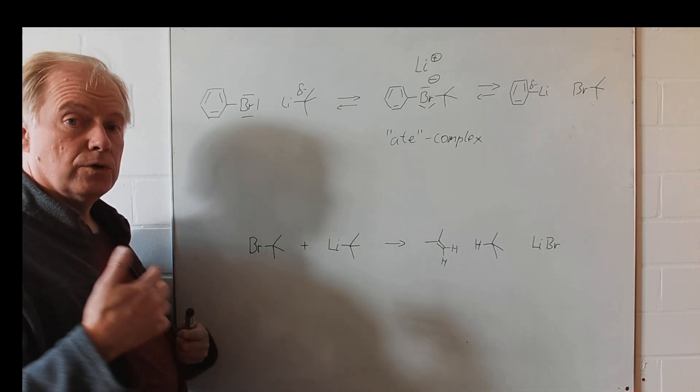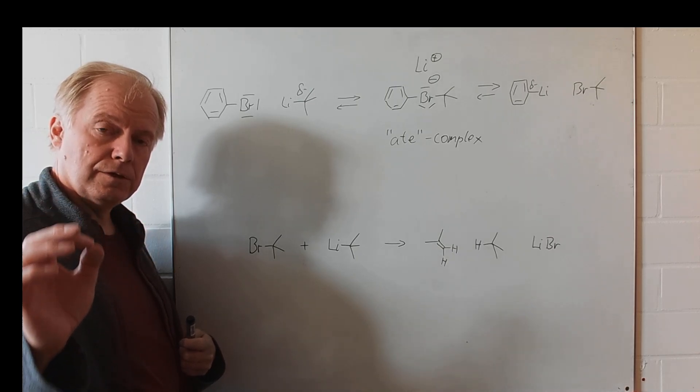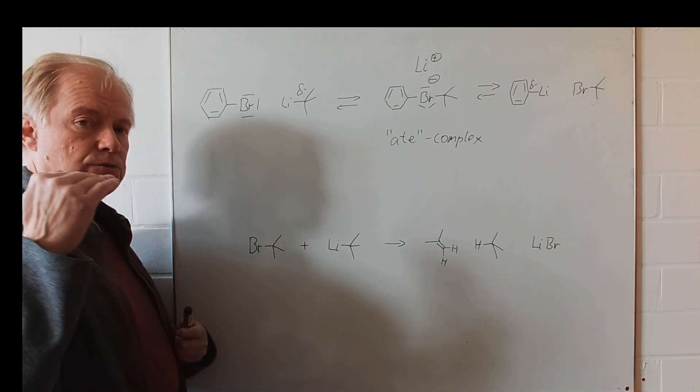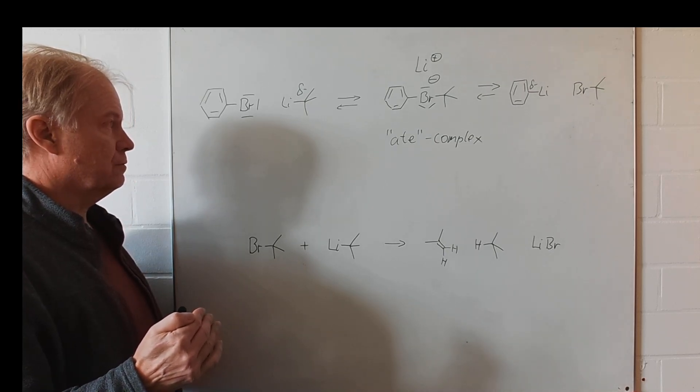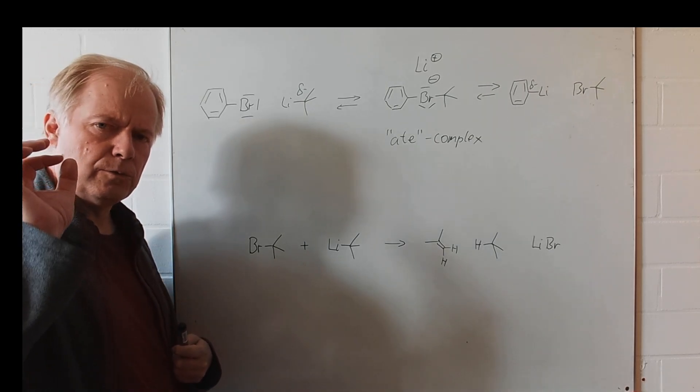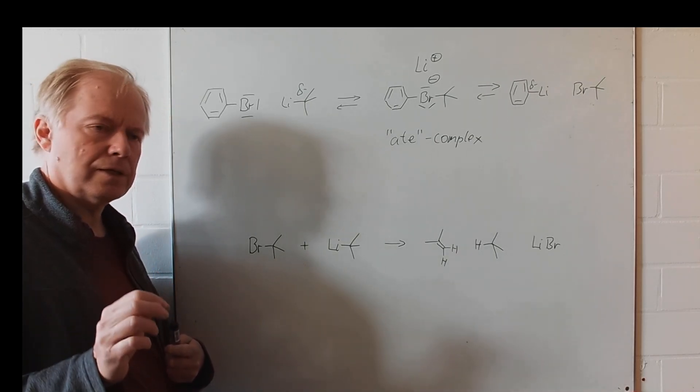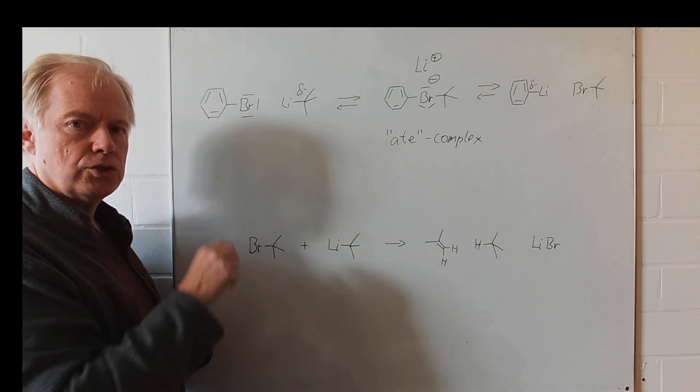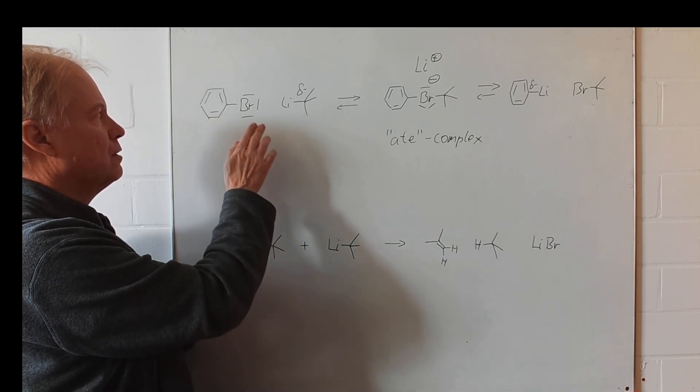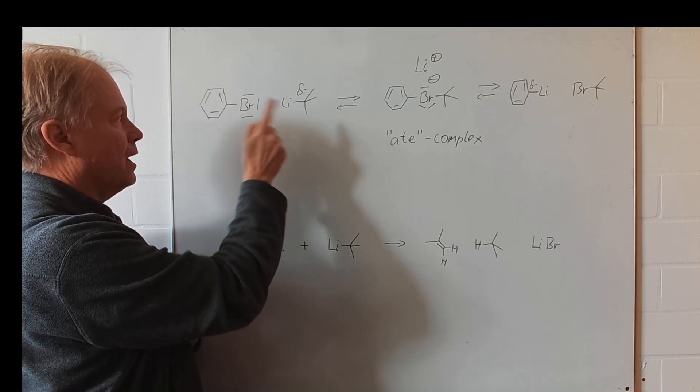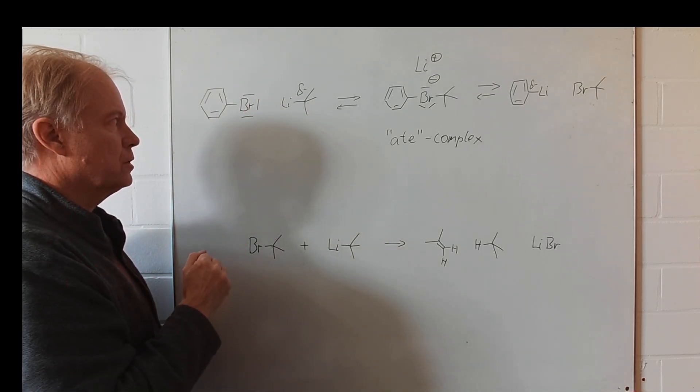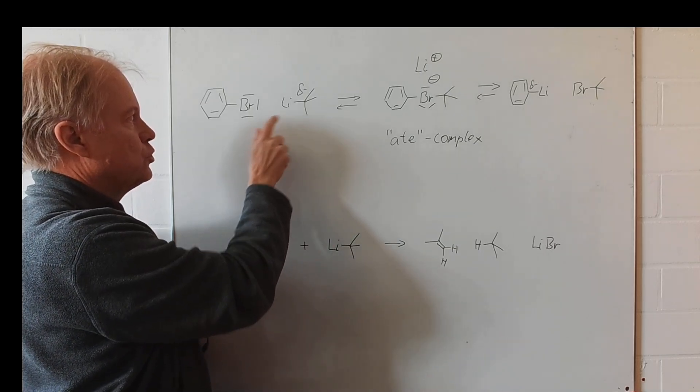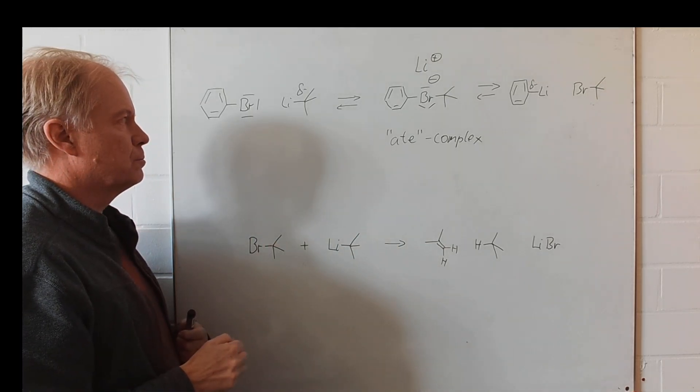We can also lithiate it with elemental lithium, but a much faster reaction which already works at minus 100 degrees is the so-called permutational interconversion with an alkyl lithium compound. In today's example we will choose tertiary butyl lithium because this has some advantages we will talk about later on.